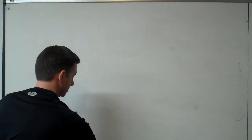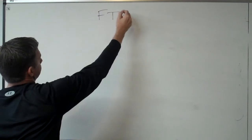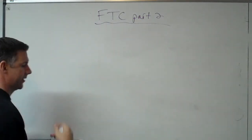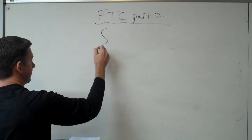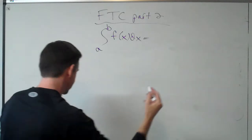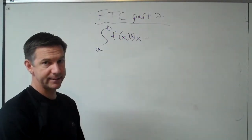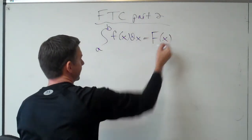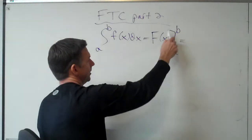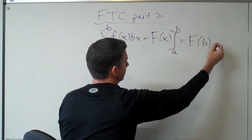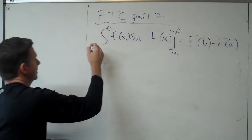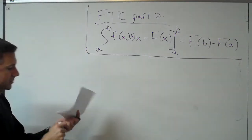Fundamental theorem of calculus, part two. FTC part two says: if f is continuous on the interval A to B, then the integral from A to B of f of x dx equals — and what you do to evaluate this is find the anti-derivative, which is capital F of x, evaluated from A to B. The way you evaluate it is you take the top number and plug it in, then subtract the bottom number plugged in.